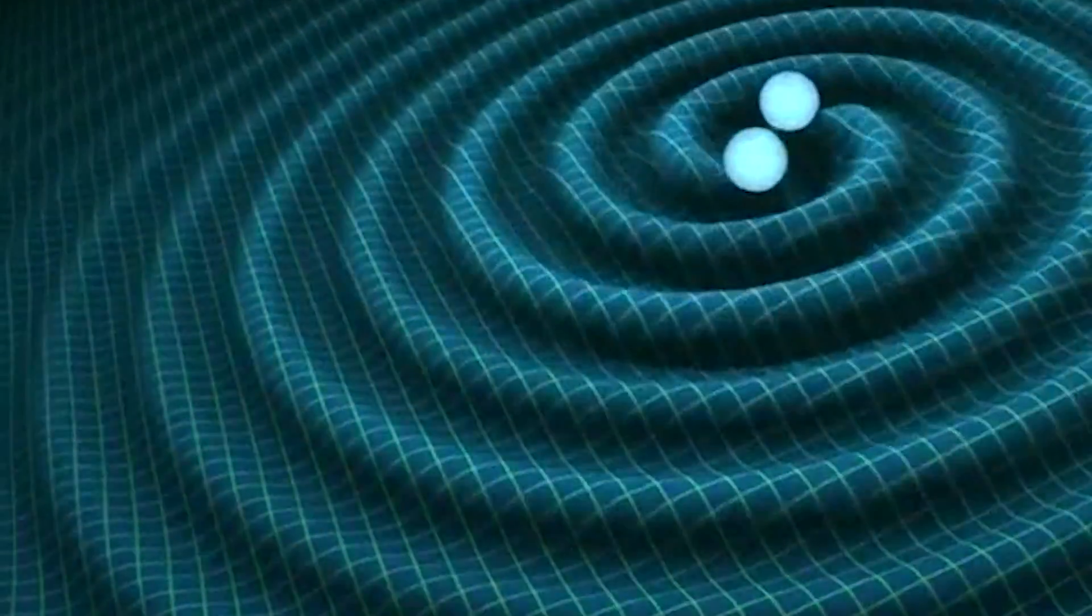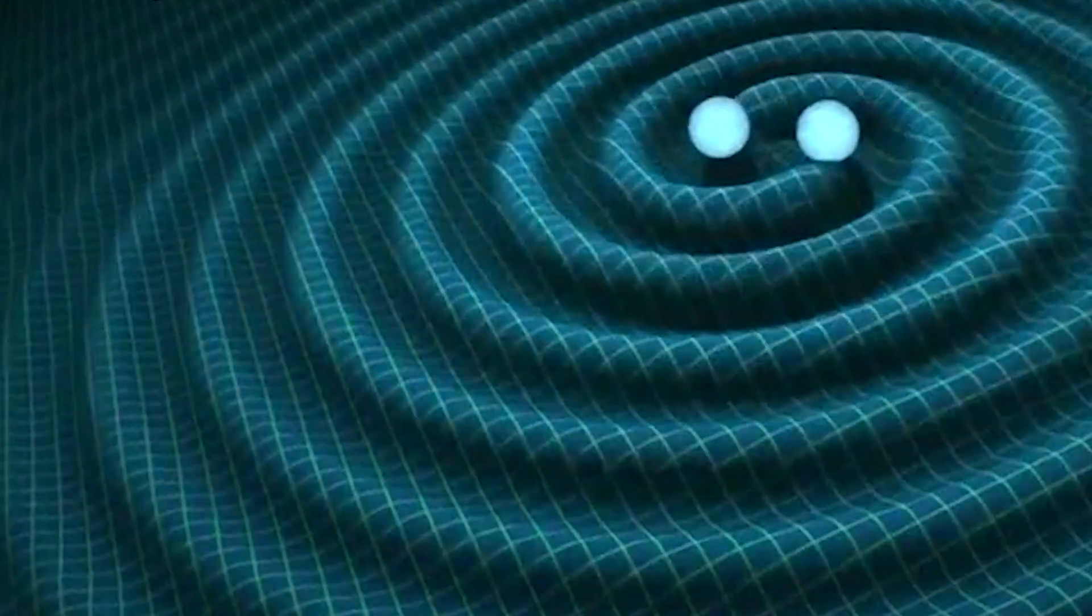But then Einstein came along and he said, well that's not quite true. The universe itself is actually like a fabric, and everything which is in the universe causes that fabric to change its shape.